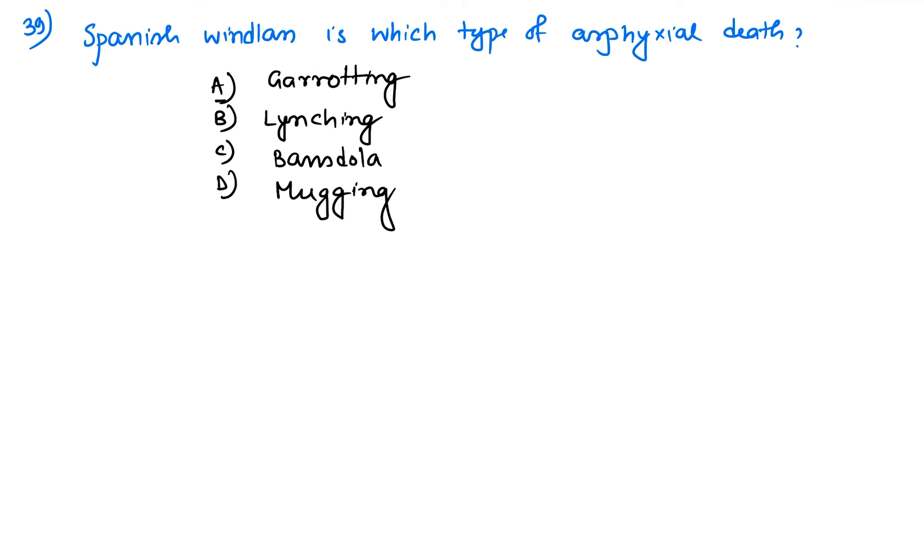Coming to question number 39: Spanish windlass is which type of asphyxial death? It is nothing but garroting. The answer will be garroting. Spanish windlass - this is a question from forensic medicine.